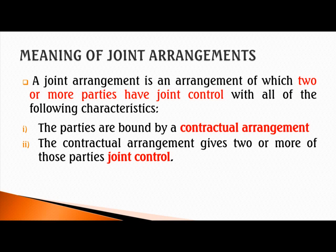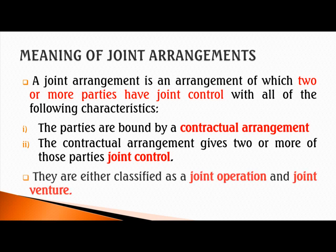If the contractual arrangement binding these parties does not give them joint control, then it is not a joint arrangement — it can be something else, such as a subsidiary, an associate, or even an investment treated in accordance with IFRS 9 Financial Instruments. Joint arrangement is of two types: joint operation or joint venture.